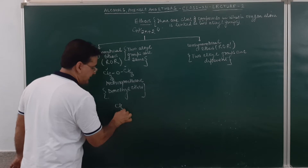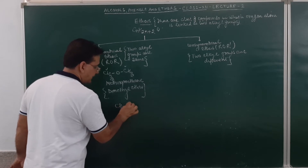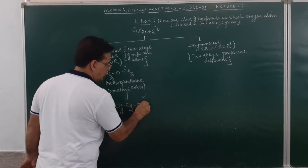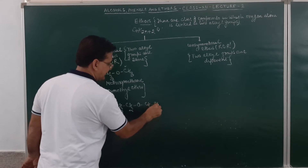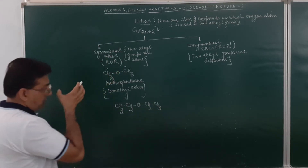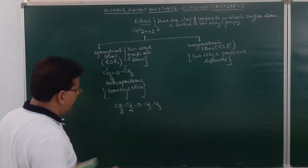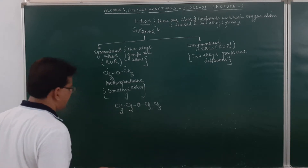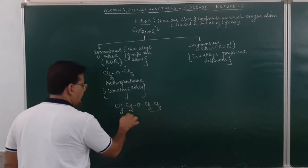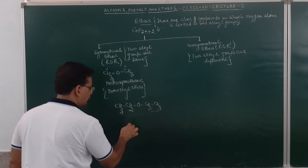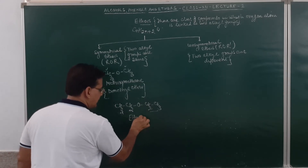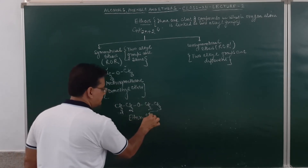Similarly, if we take the compound CH3-CH2-O-CH2-CH3, here again both the alkyl groups are the same — this is an ethyl group — so the name of this compound will be given as ethoxyethane.